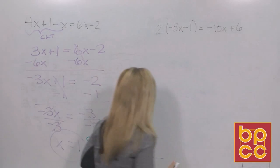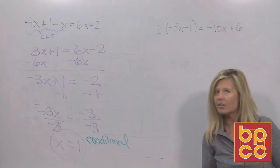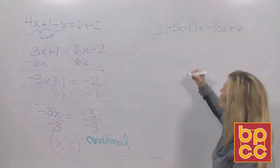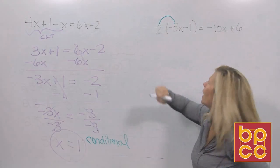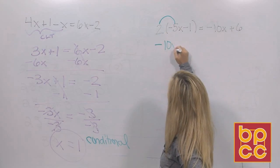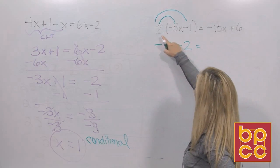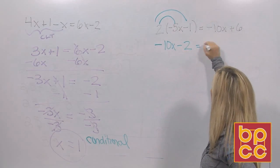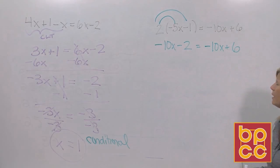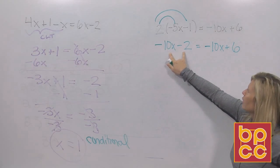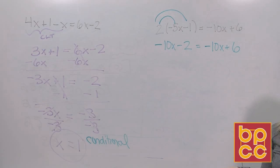Let's go to example two. Here's my linear equation. The first thing we've got to do is distribute to get rid of parentheses. Two times negative 5x is negative 10x, two times one is two, two times negative one is negative two. Bring down the right side. There's nothing to collect here — these terms are not alike.